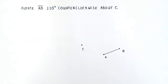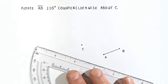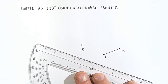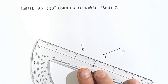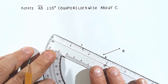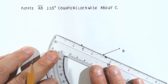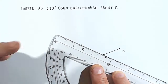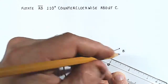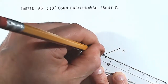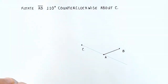The way we do this is we take our protractor and we connect point C with point A. We draw a line through it like this. Be real precise.